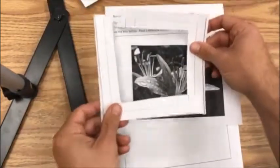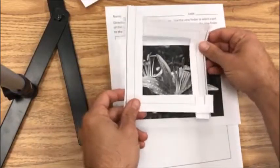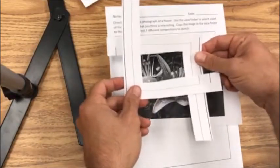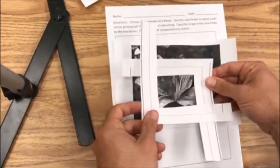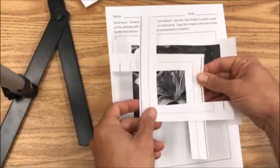A viewfinder is made up of two pieces of paper that are in the shape of an L. If you'll notice when I cross them over one another it creates a rectangle or a square.